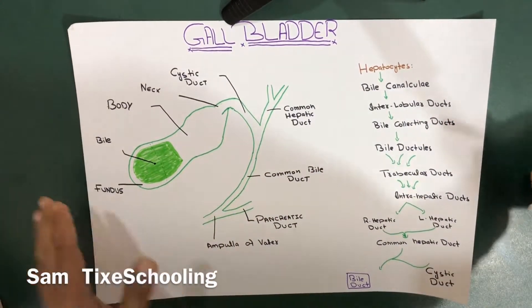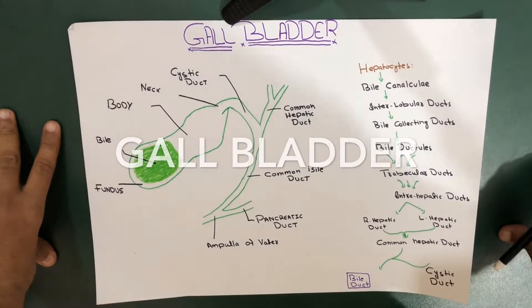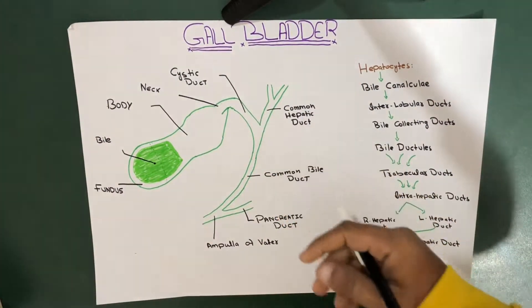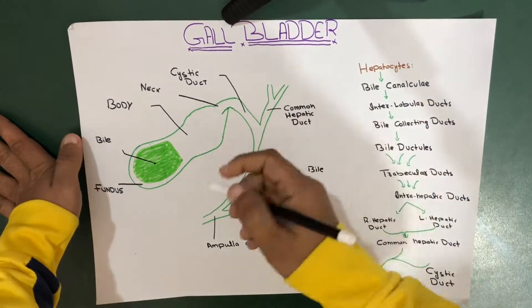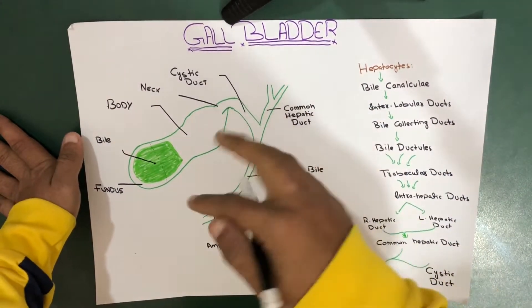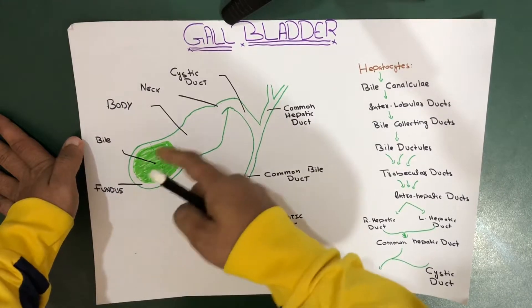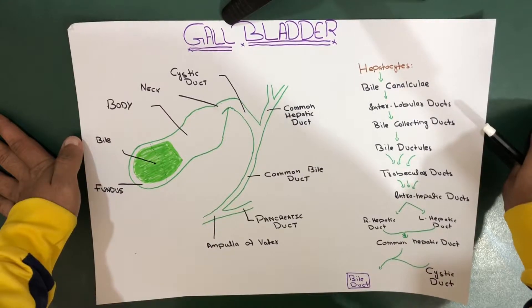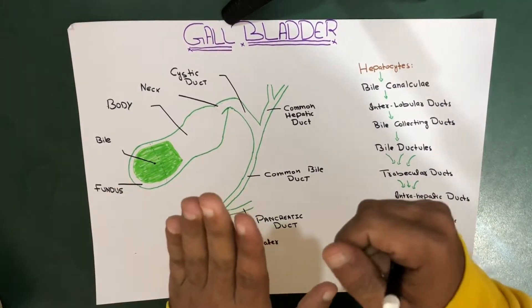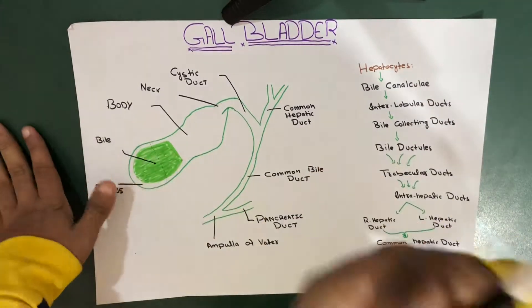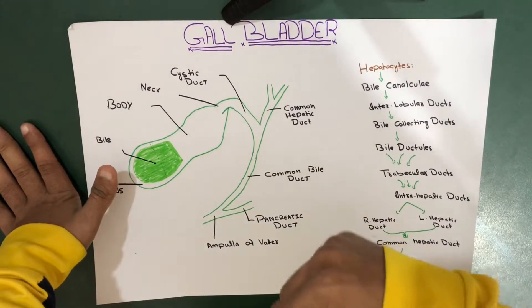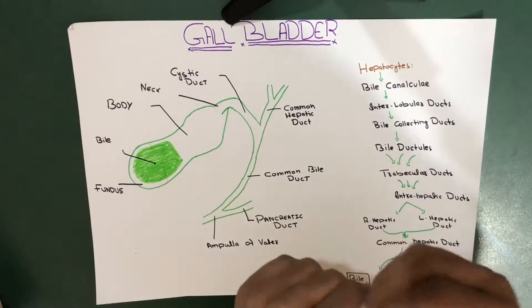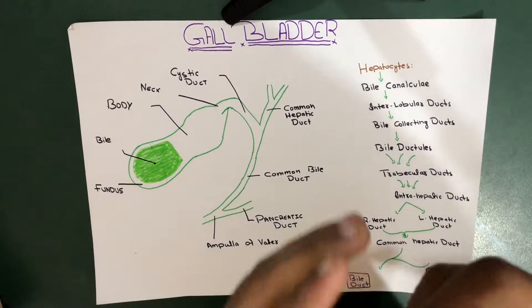Hello YouTube, this is Sam from Tiger Schooling. In this session we're going to talk about the gallbladder. The gallbladder is actually a pouch which has its fundus, its body, its neck and its ducts, and they drain into the second part of the duodenum. The gallbladder is nothing but a pear-shaped sac that lies within the inferior aspect of the right lobe of your liver.